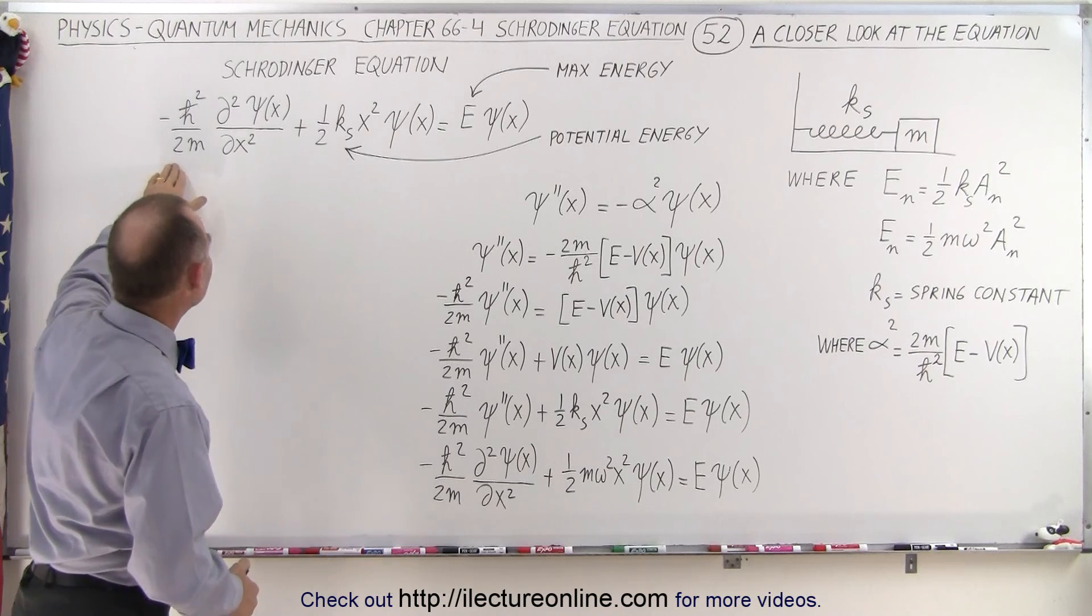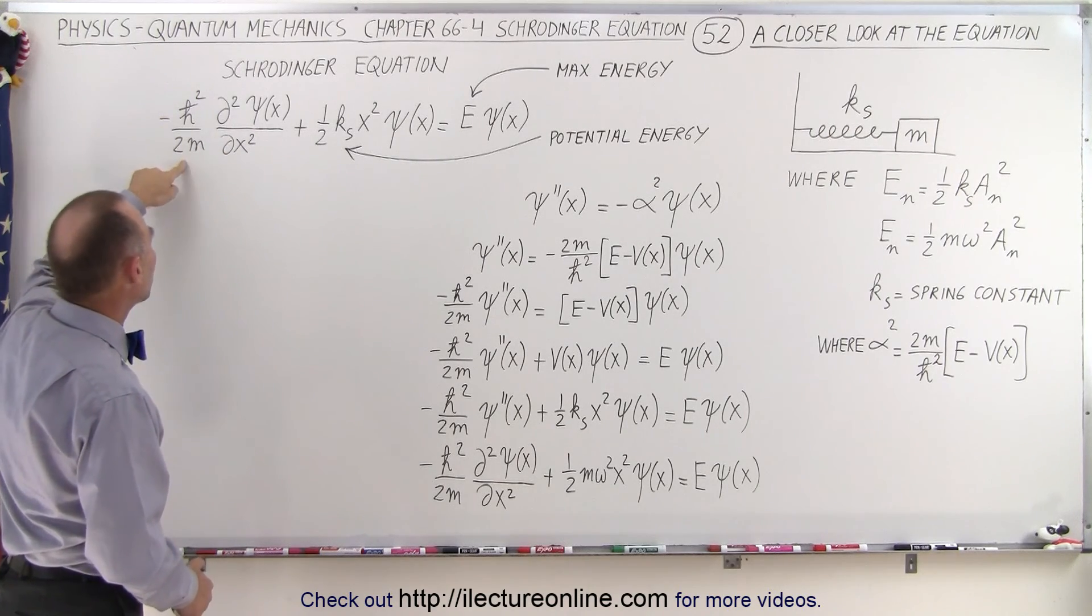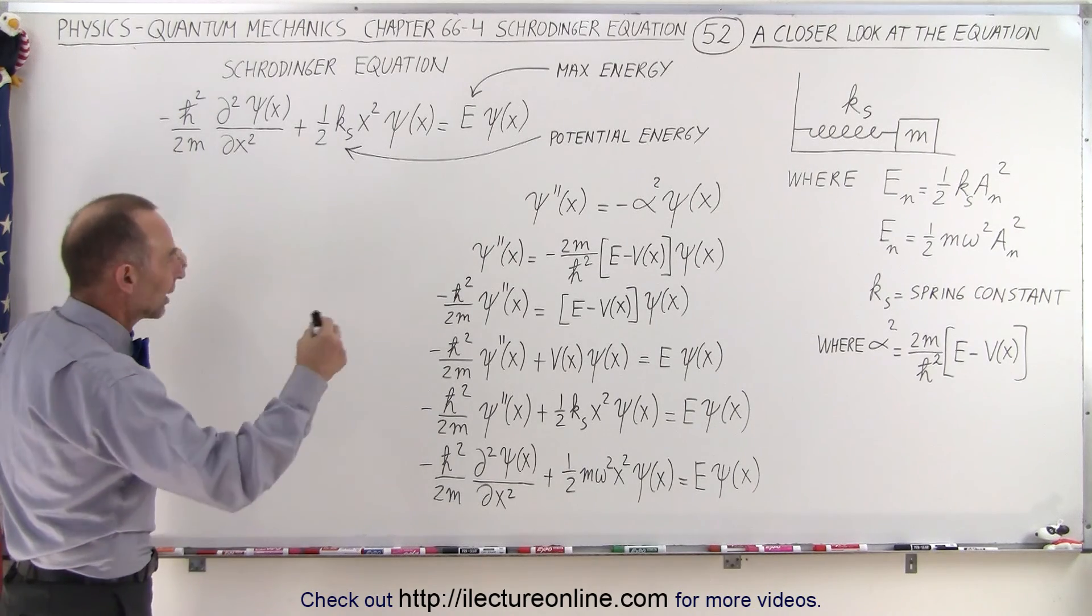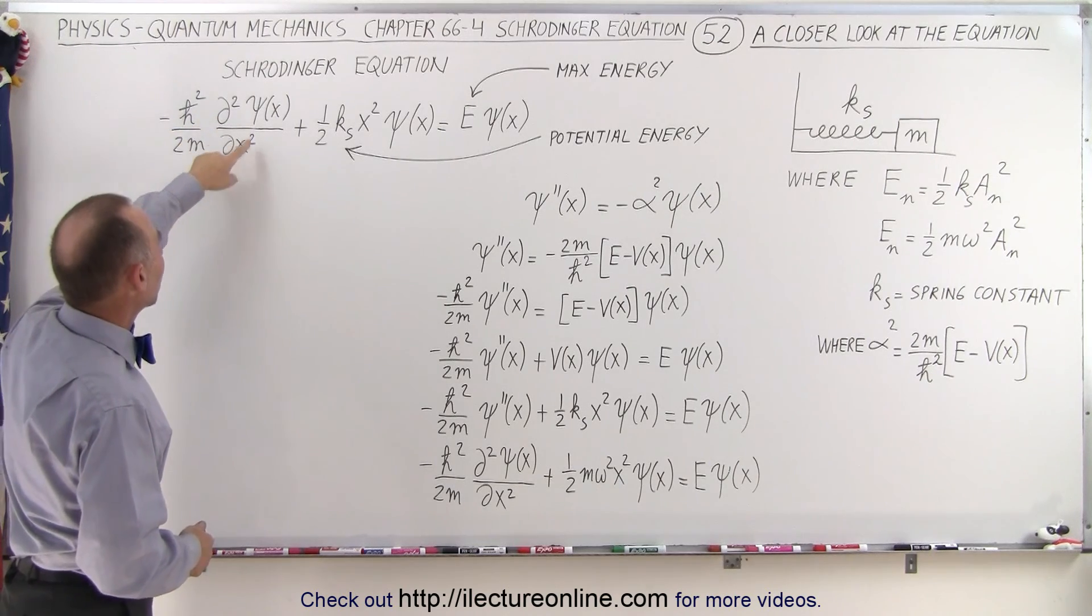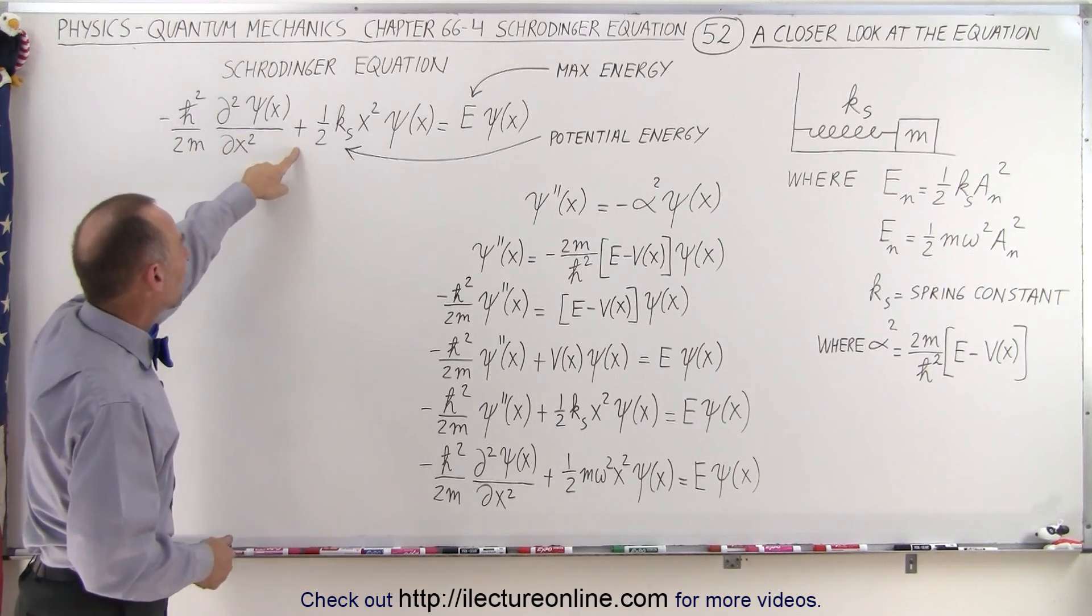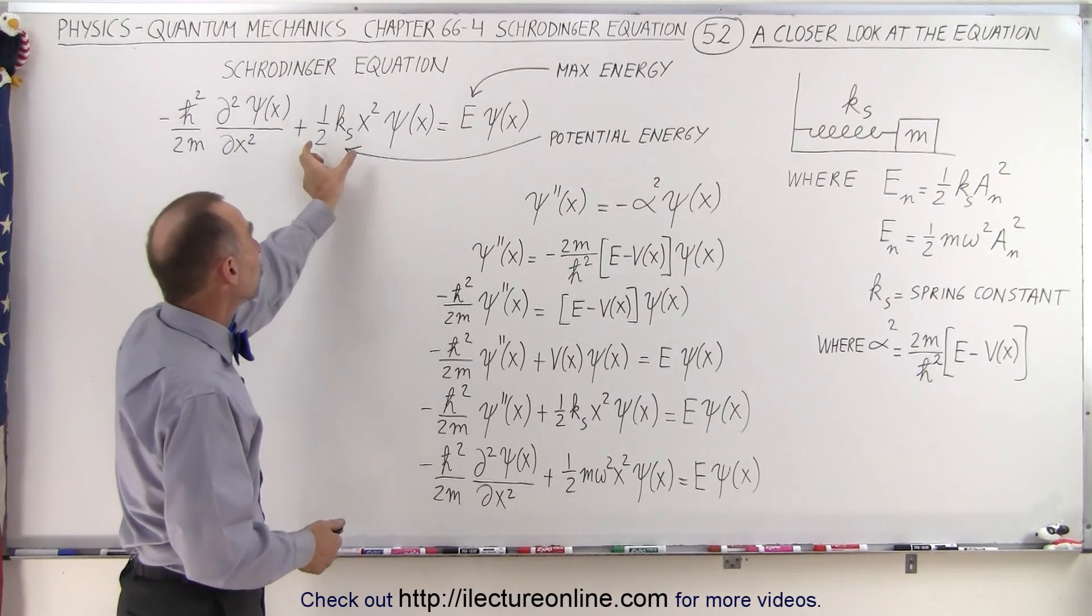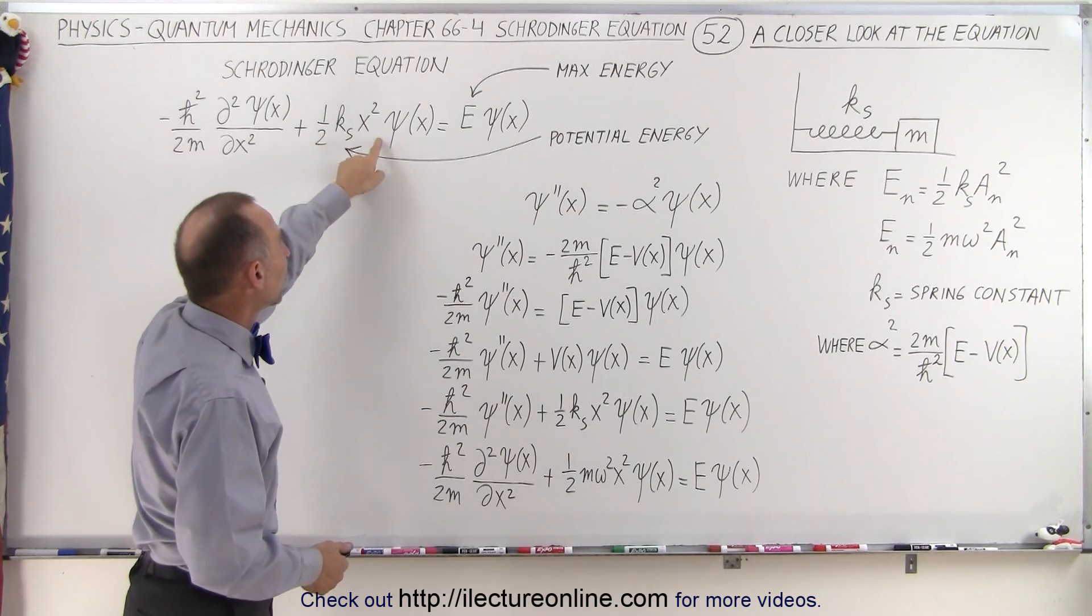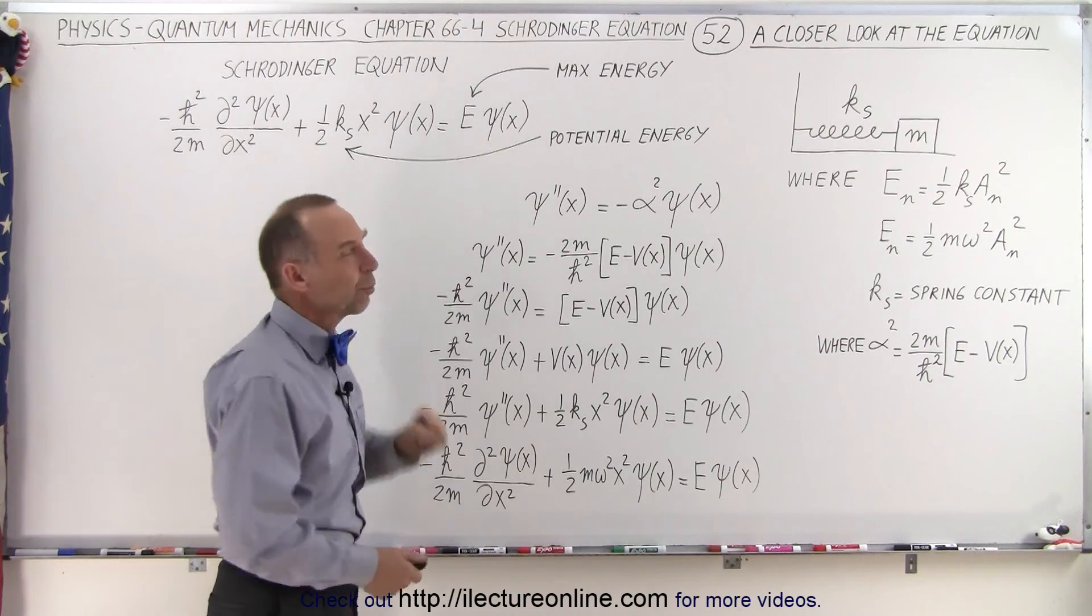You often will find it like this, where it's written with the operator minus h-bar squared over 2m (m of course being the reduced mass if it's an oscillator like a diatomic oscillator) times the second derivative with respect to x of the wave function, plus one-half kx squared. Now this would be the potential energy found in the oscillator as a function of position, multiplied times the wave function, equals the energy times the wave function.